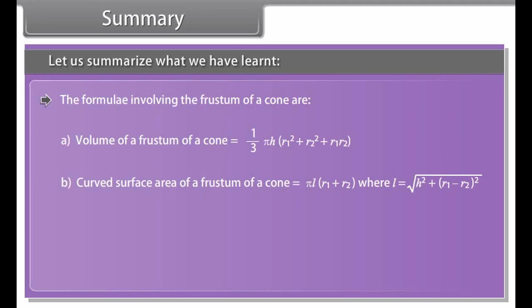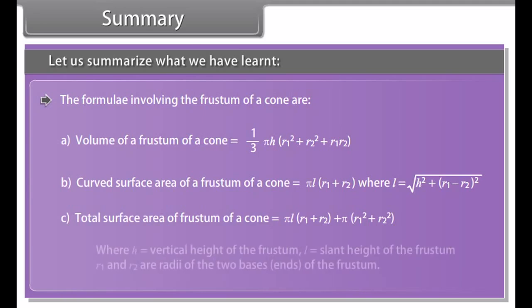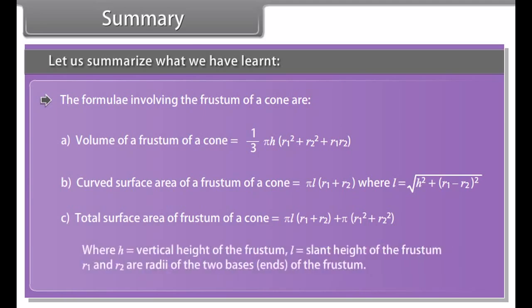Did you know? Frustum is a Latin word meaning 'piece cut off,' and its plural is frusta. Usually when we say cylinder we mean a circular cylinder, but you can also have elliptical cylinders. If the cross-section is the same from one end to the other, it is still a cylinder. Of all shapes, a sphere has the smallest surface area for a given volume — or put another way, it can contain the greatest volume for a fixed surface area.